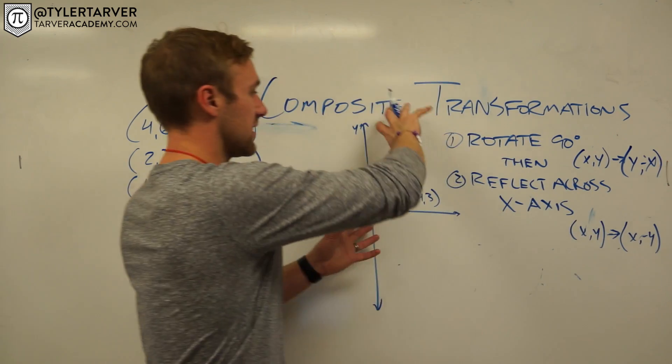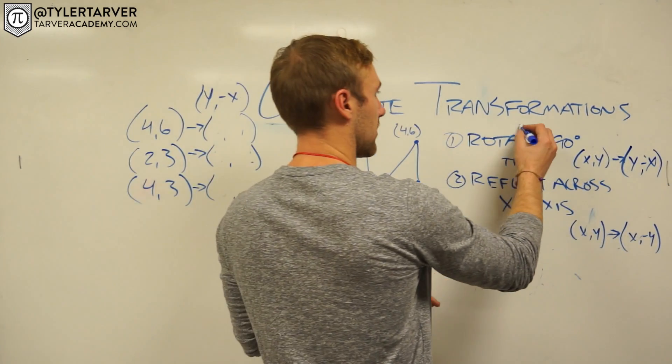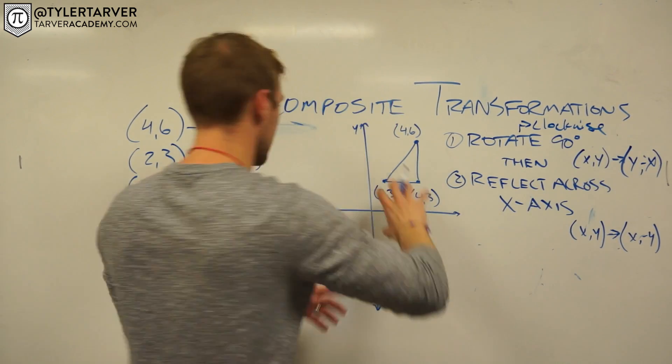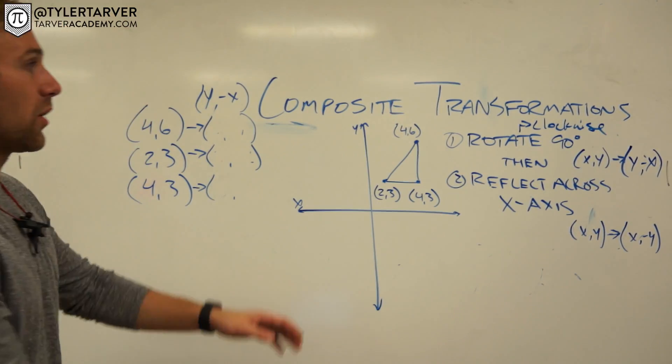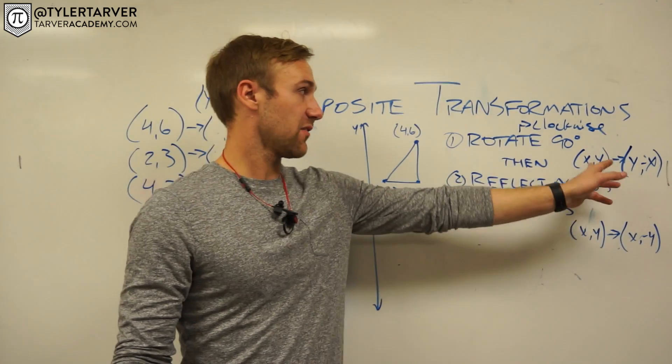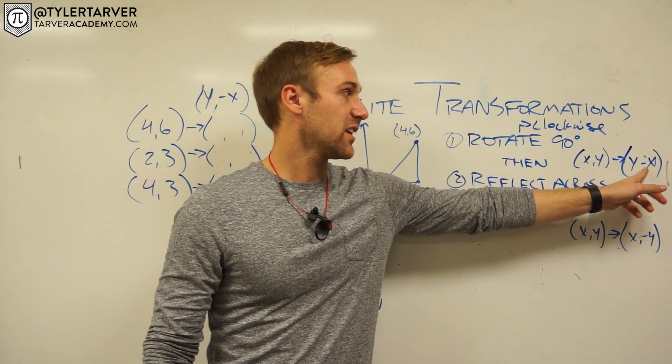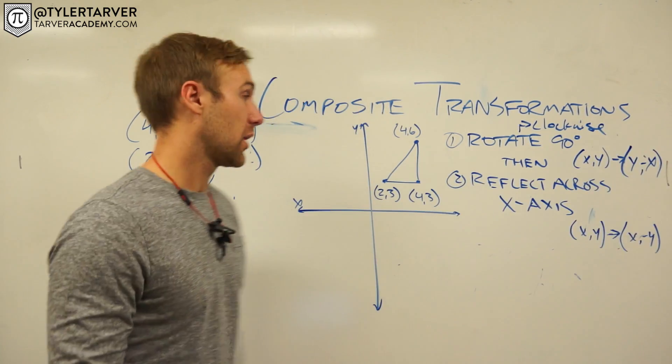We're going to rotate it clockwise. So we're going to rotate it clockwise. Let me put that on here. Clockwise. All right, so we want to rotate it clockwise around the origin. So what I'm going to do is I'm going to take it from this original x and y and I'm going to flip my x and y and then I'm going to change the sign on my x, my back number.